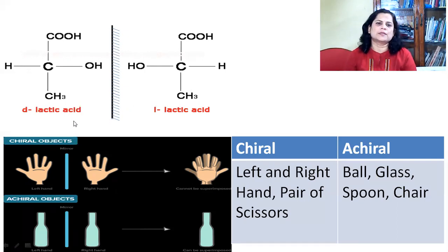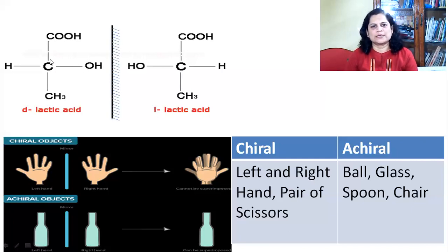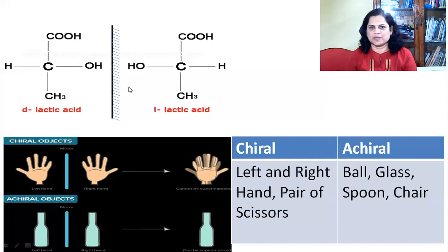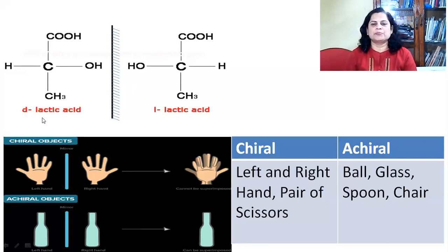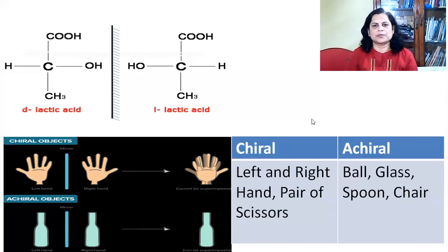An example is lactic acid. Lactic acid contains an asymmetric carbon atom bonded with four different groups: a hydroxyl group, a carboxylic group, hydrogen, and a methyl group. That carbon is an asymmetric carbon atom. When we look at its mirror image and place the two structures on each other, they do not match — these are non-superimposable mirror images of each other. So a chiral compound shows non-superimposable mirror images.